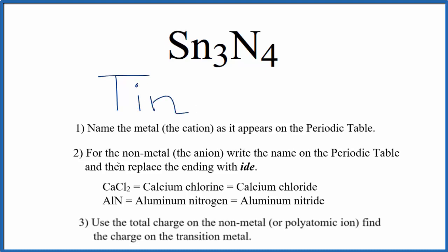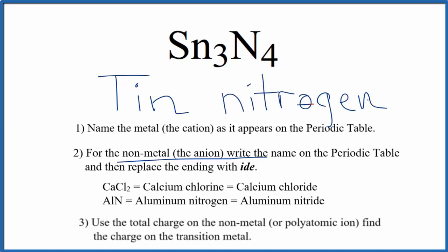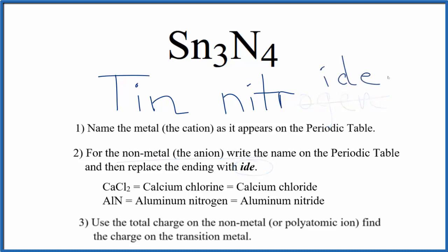Next, we're going to write the name of the non-metal as it appears on the periodic table. So N — that's nitrogen. Then we take this ending, O-G-E-N, and replace it with -IDE. That gives us the name tin nitride for Sn3N4.